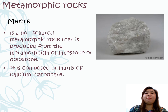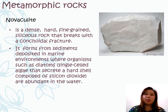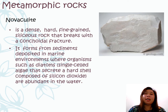Marble is a non-foliated metamorphic rock. It is composed mainly of calcium carbonate that is produced from the metamorphism of dolomite or limestone. Another example of metamorphic rock is the novaculite. It is a dense, hard, fine-grained, siliceous rock that breaks with a conchoidal fracture. It forms from sediments deposited in marine environments where organisms such as diatoms or single-celled algae that secrete hard shells composed of silicon dioxide are abundant in the water.